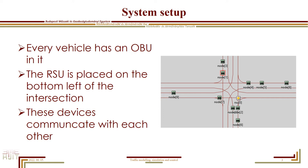The system architecture is quite simple. Every vehicle has its own OBU, which means onboard unit, and there is one RSU, which means roadside unit, placed at the bottom right of the intersection. These devices communicate with each other, sending relevant information about the light state and information about the environment, like if there is an accident or vehicles are slowing down ahead, so drivers have to pay more attention. Using this communication method would make traffic more fluent.